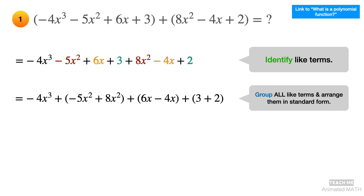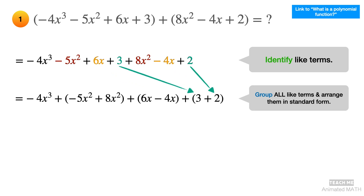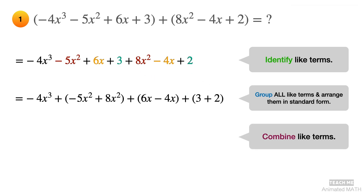Let's get back to grouping like terms. There is only one term for the x cubed. Group the terms with x squared. Group the terms with x. Group the constants together. Last, combine like terms using addition and subtraction. And the final answer is negative 4x cubed plus 3x squared plus 2x plus 5.